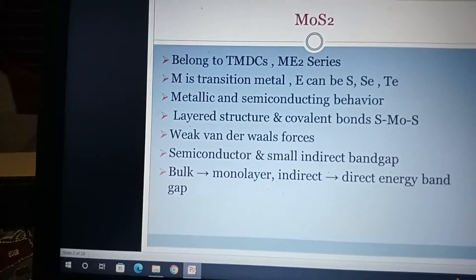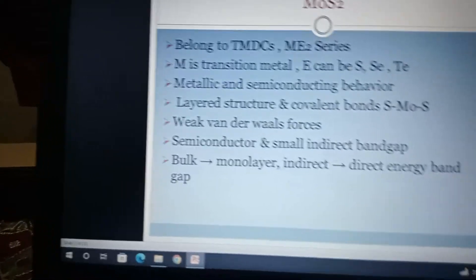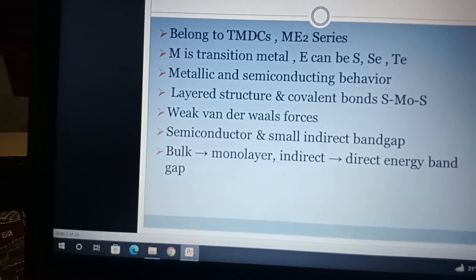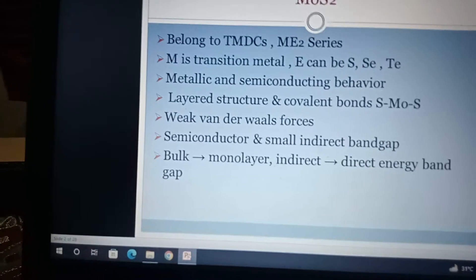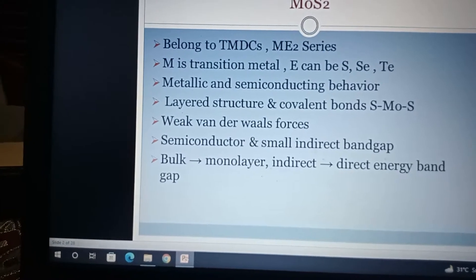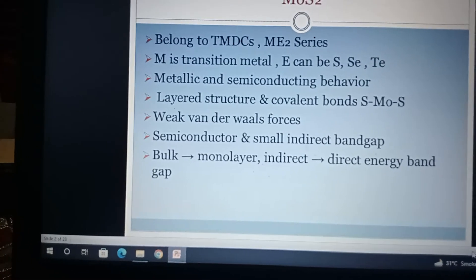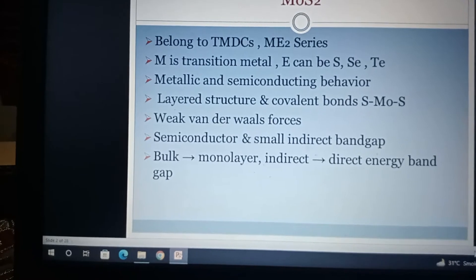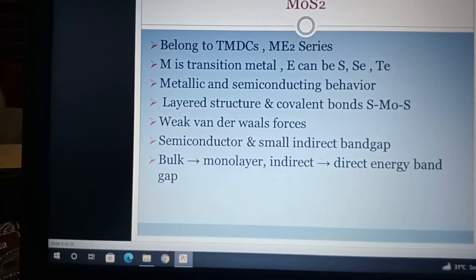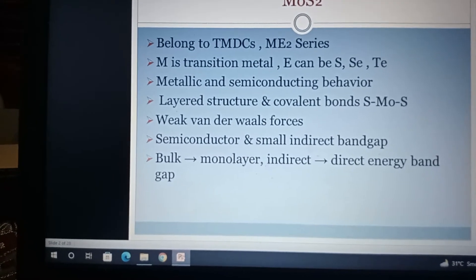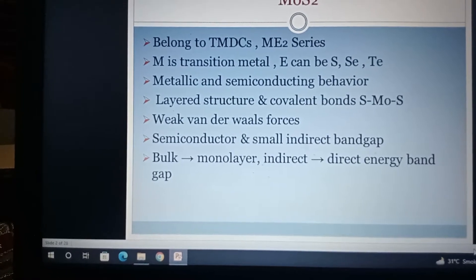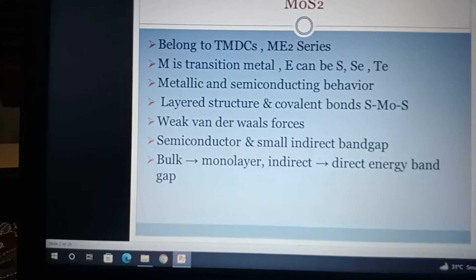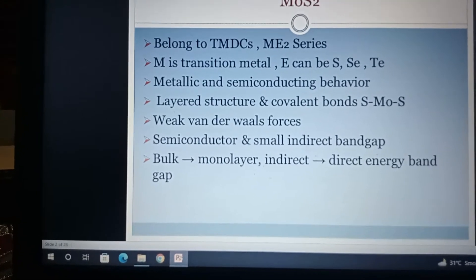MoS2 belongs to the Transition Metal Dichalcogenides, TMDC, which belongs to ME2 series. M is a transition metal, and E can be S, selenium, tellurium, Se, and Te. MoS2 contains metallic and semiconducting behavior.